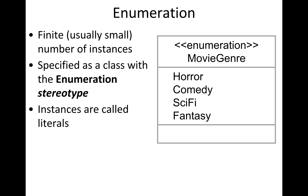Enumerations are captured using something that looks like a class, but it's not really a class. Notice that on top of it, there are angle brackets with the word 'enumeration' — these are stereotypes that allow us to expand the UML language. When we come up with a type of data we want to capture and don't have an explicit representation in UML, we can create our own meaning.